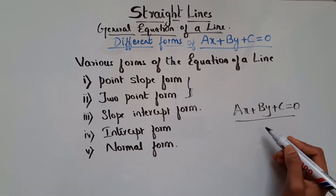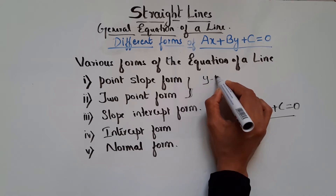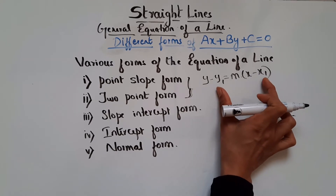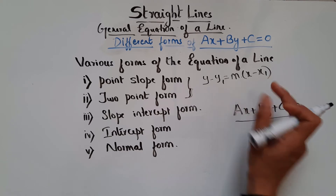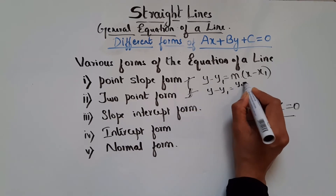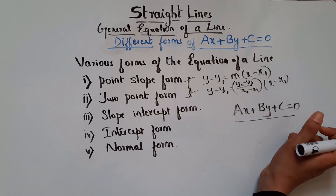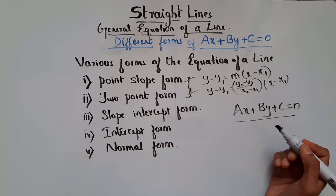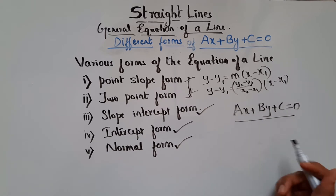We cannot use point-slope form or two-point form to find the parameters. In slope-point form, the formula is y minus y1 equals m times x minus x1 — we don't know the values of x1 and y1 because the straight line has infinite points. Similarly, in two-point form — y minus y1 equals (y2 minus y1) divided by (x2 minus x1) times (x minus x1) — we again don't know x1 and y1. So by using point-slope form and two-point form, we cannot find the parameters.